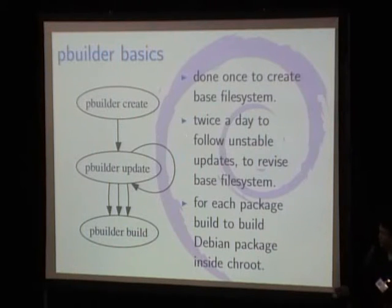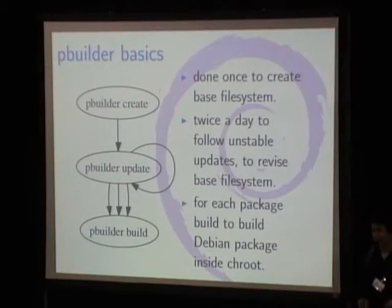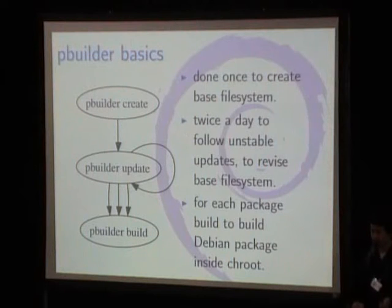What kind of commands do you use when you run pbuilder? I drew a diagram just for the sake of it. You usually run pbuilder create once, then do pbuilder update every time something changes in the distribution, and run pbuilder build to build a package inside the base.tgz. A few years ago you only needed to do pbuilder update once every day, however because the archive is updated twice every day you have to do it twice a day, which is a bit annoying because pbuilder update is a bit slow.